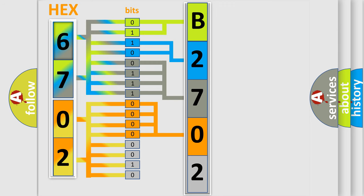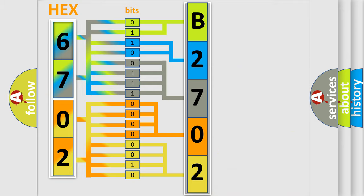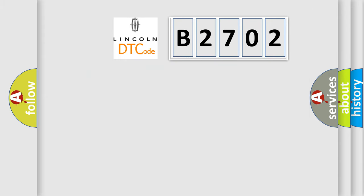A single byte conceals 256 possible combinations. We now know in what way the diagnostic tool translates the received information into a more comprehensible format. The number itself does not make sense to us if we cannot assign information about what it actually expresses. So, what does the diagnostic trouble code B2702 interpret specifically for Lincoln car manufacturers?